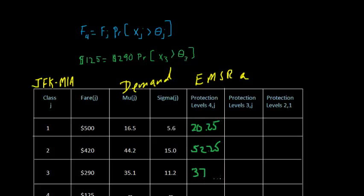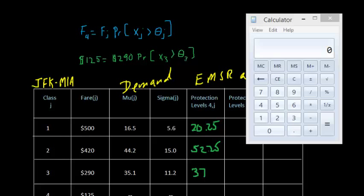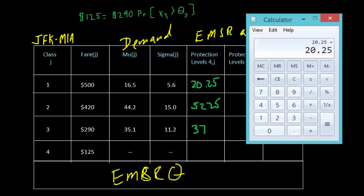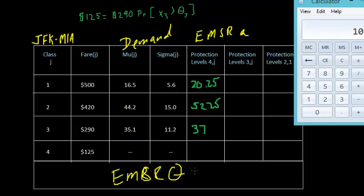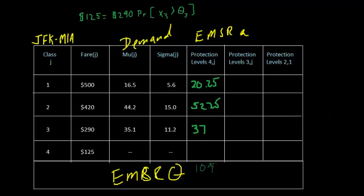Now we're ready to sum these protection levels together, and that will be the EMSR protection level for classes 3, 2, and 1. We assume lower fare customers request seats first. As customers request $125 seats, we're going to protect this number of seats for the higher classes. So that's 20.25 plus 52.25 plus 37 equals 109 — taking the integer portion. We're going to protect 109 seats for classes 3 and above. We'll calculate the remaining protection levels in the next video.